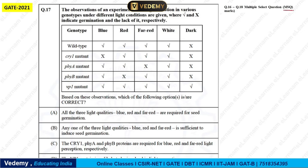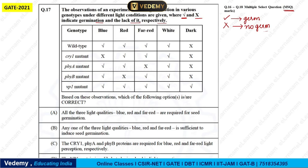The next question is also MSQ — again Multiple Select Question, so multiple options can be correct. Make sure to give accurate answers; partial answers will not give marks. The question says: observations of an experiment on seed germination in various genotypes under different light conditions are given, where a tick indicates germination and a cross indicates lack of germination. The table shows genotypes vertically and types of light horizontally — blue, red, far-red, white, and dark.